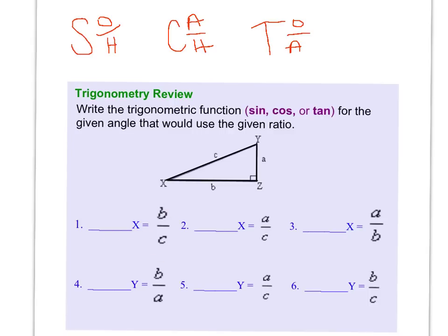So let's take a look at number one. We should be looking at angle X and we have B, which is the adjacent side, and C, which is the hypotenuse. Remember the hypotenuse is always opposite the 90 degree angle. So which of our three trig functions would be adjacent over hypotenuse? I can look up here and I see adjacent over hypotenuse. So therefore this would be cosine.